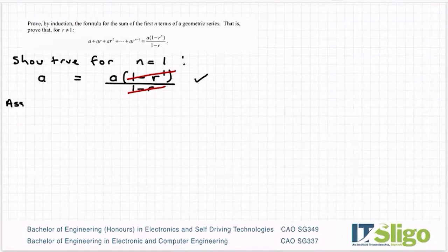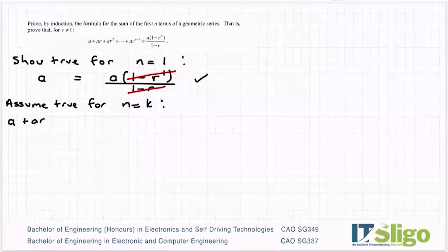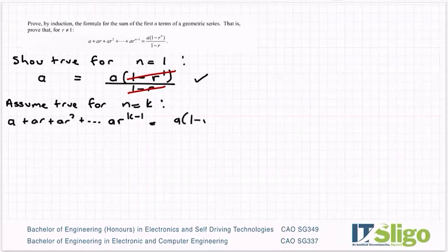Okay, let's assume true for n equals k. So I'll end up with a plus ar plus ar squared plus dot dot dot ar to the power of k minus 1 equals a times 1 minus r to the power of k over 1 minus r. So nothing too spectacular there, there's not much I can do with it, just write it out with n equals k.